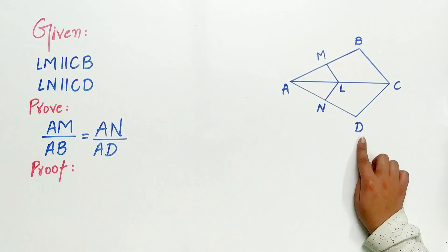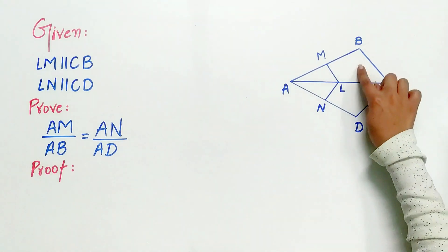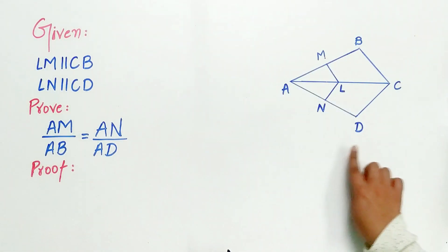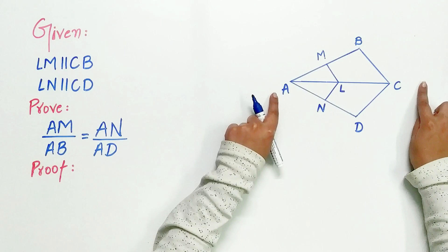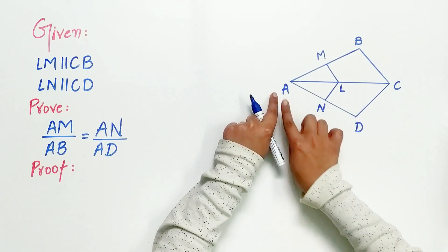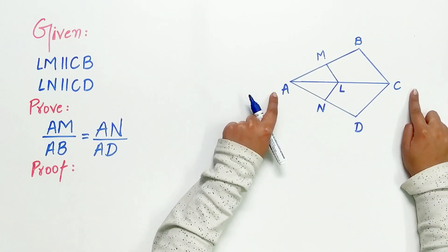Now look at the diagram carefully. There are two triangles in the given diagram. One is ABC, that's a triangle, and ADC is also a triangle.